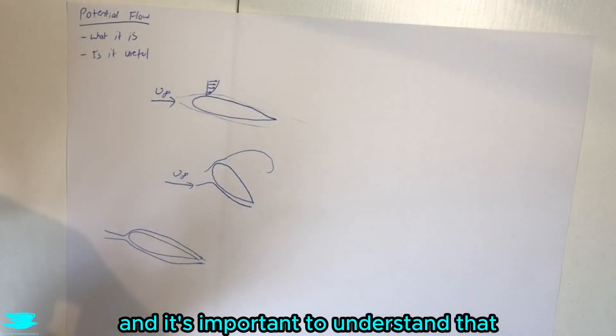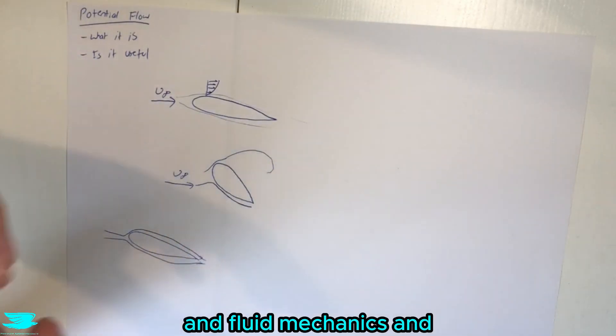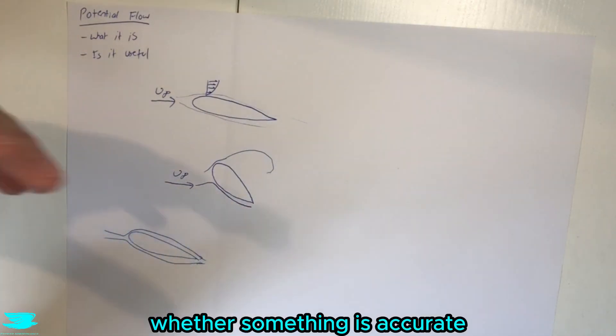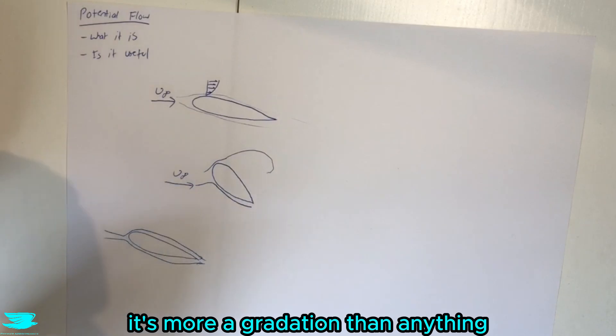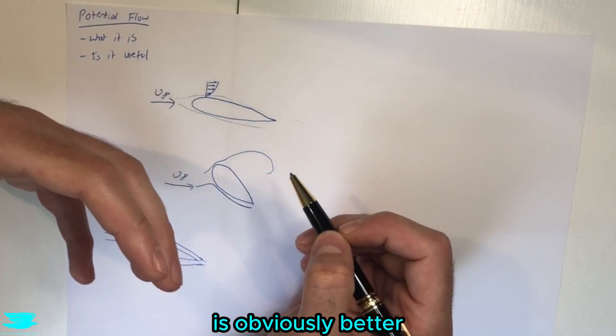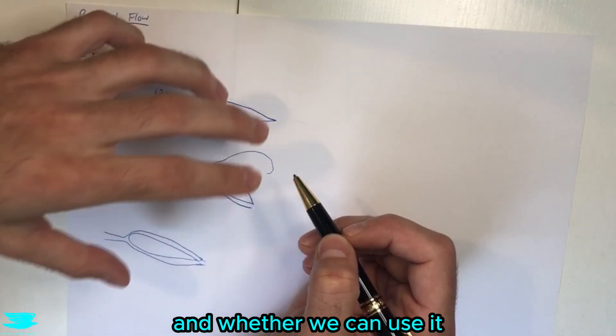And it's important to understand that when it comes to a real application of aerodynamics and fluid mechanics and really anything in science, any application, it's not really about whether something is accurate or not. It's about how accurate it is - it's more a gradation than anything. So having something that is very accurate is obviously better, but you can't have something that is 100% accurate. So it's really about how accurate this is and whether we can use it.